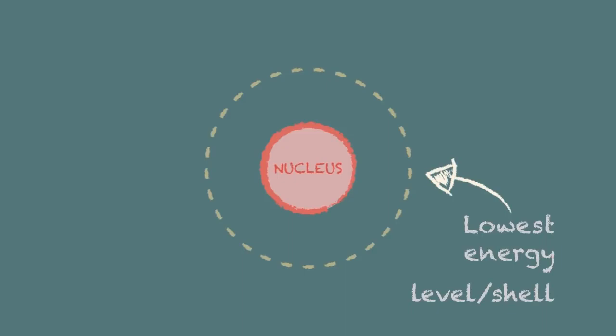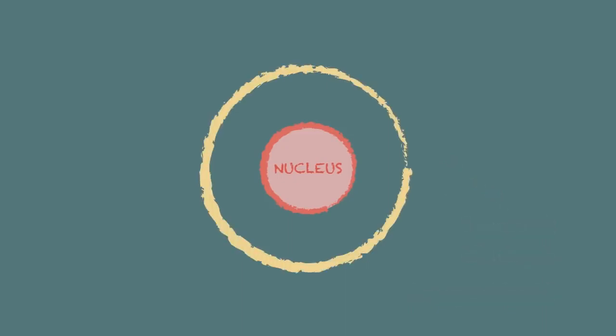In our diagrams the shell nearest the nucleus is going to represent the lowest energy level or shell and we draw a circle to depict each shell. We use a dot or a cross to represent each electron and we'll represent the nucleus by the chemical symbol.